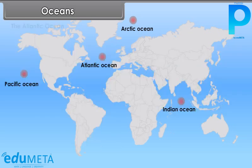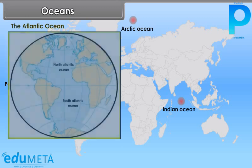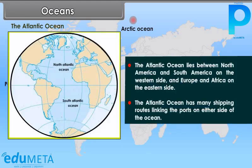The Atlantic Ocean lies between North America and South America on the western side and Europe and Africa on the eastern side. The Atlantic Ocean has many shipping routes linking the ports on either side of the ocean.